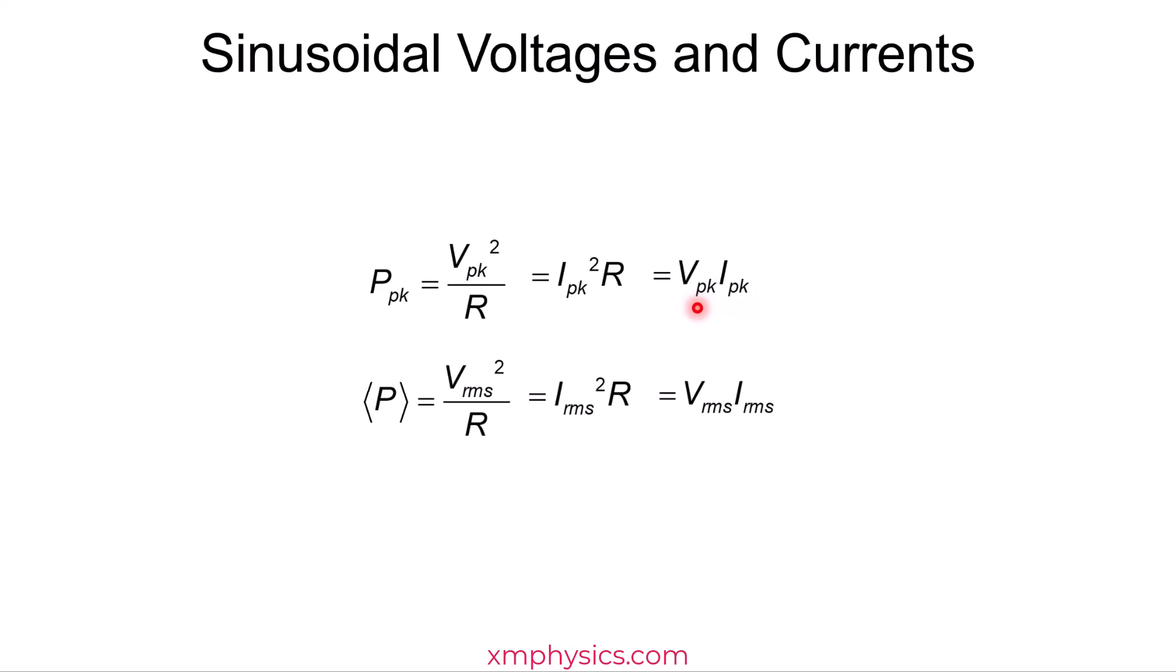The same applies to the VI formula. Vpeak times Ipeak gives you the peak power dissipation, whereas root mean square V times root mean square I gives you the average power dissipation. That's why we love RMS values.